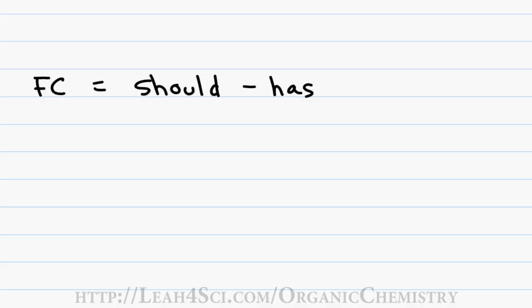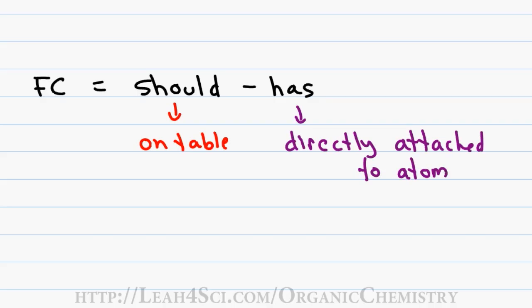Now it's important to understand the shortcut so that you can apply it quickly. Should is the number of valence electrons an atom should have and this is on the table. Has means the number of electrons directly attached to the atom. So let's put this into practice so I can prove to you how easy it is to come up with a formal charge.